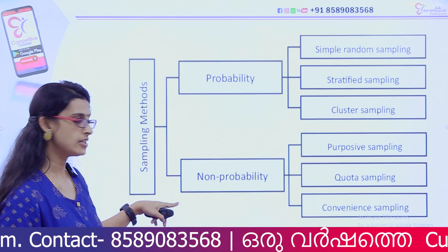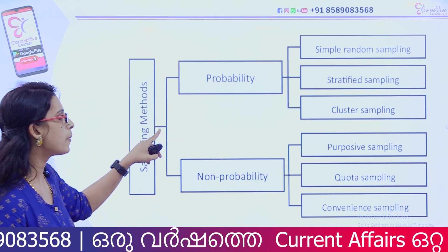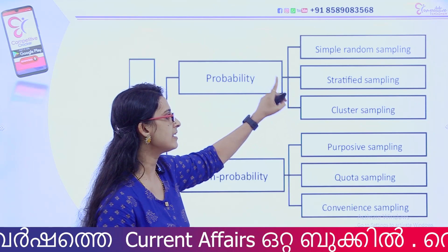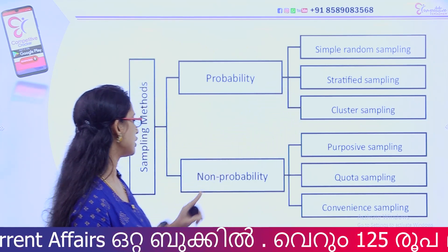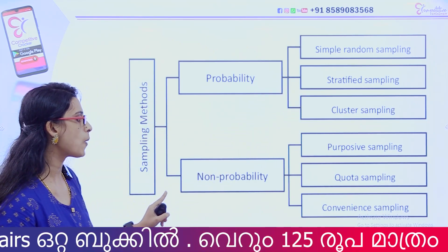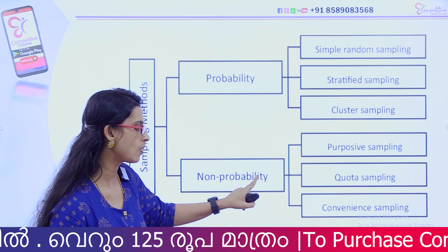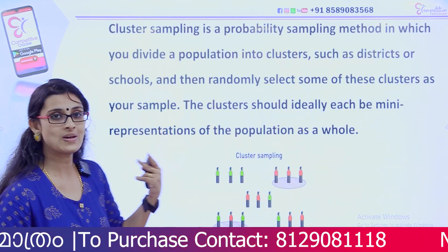Sampling is divided into two types: Probability and Non-probability. Probability sampling includes simple random sampling, stratified, and cluster. Non-probability sampling includes purposive and convenience sampling.